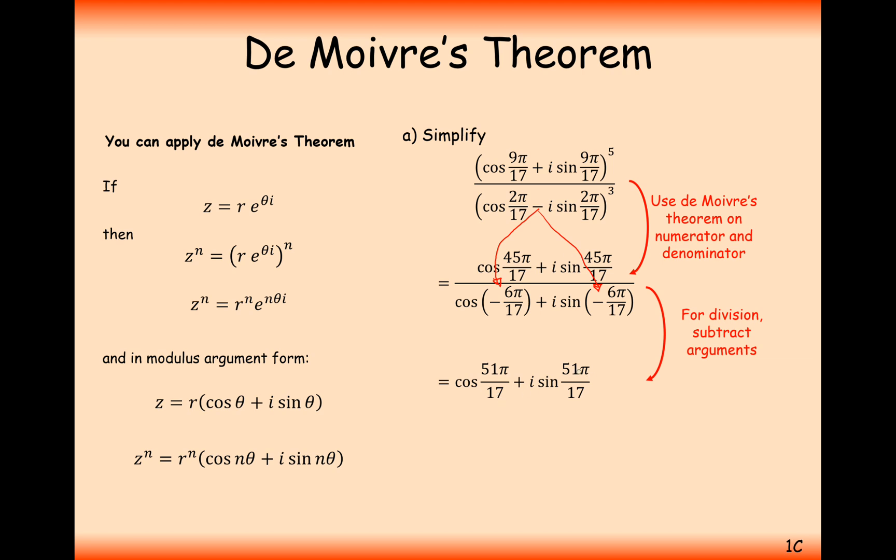Now 51 pi over 17 doesn't feel like it's in between minus pi to pi. So we'll have to subtract 2 pi because it doesn't really matter if you're adding or subtracting 2 pi from either a cos function or a sine function. We just want to do it to make sure it's in between pi to minus pi. It actually simplifies down to something quite nice: cos pi plus i sine pi. We could actually work this out: cos of pi is minus 1 and sine of pi is 0, so that's going to give us a final answer of minus 1.